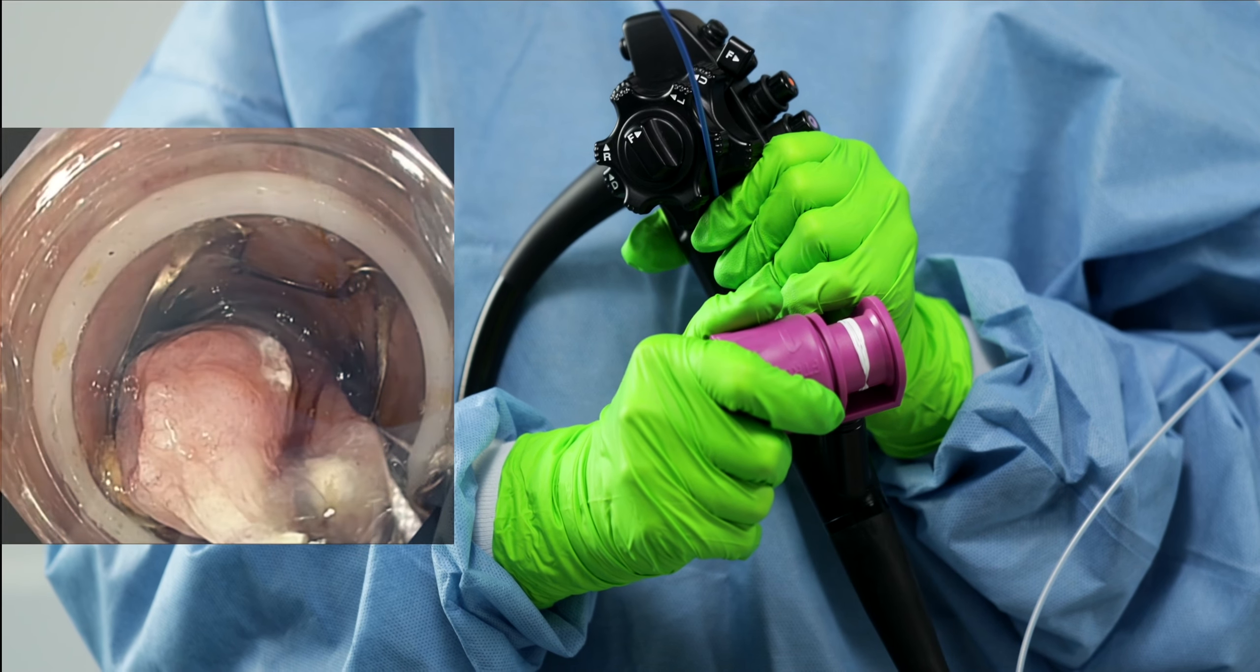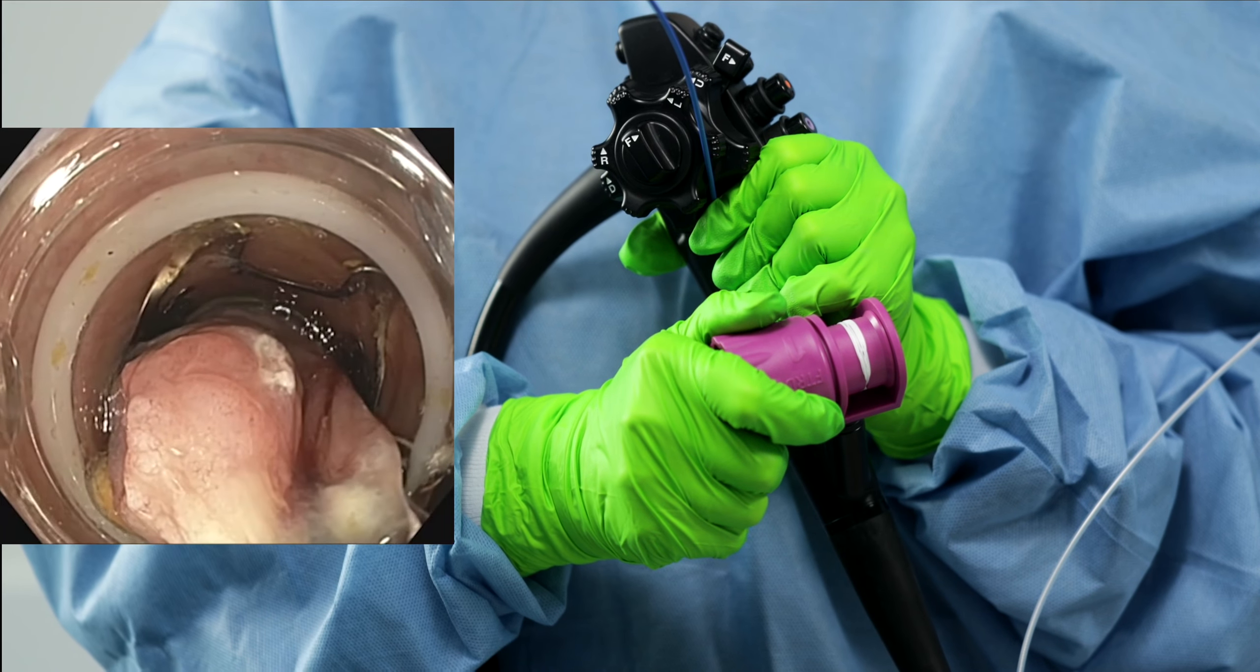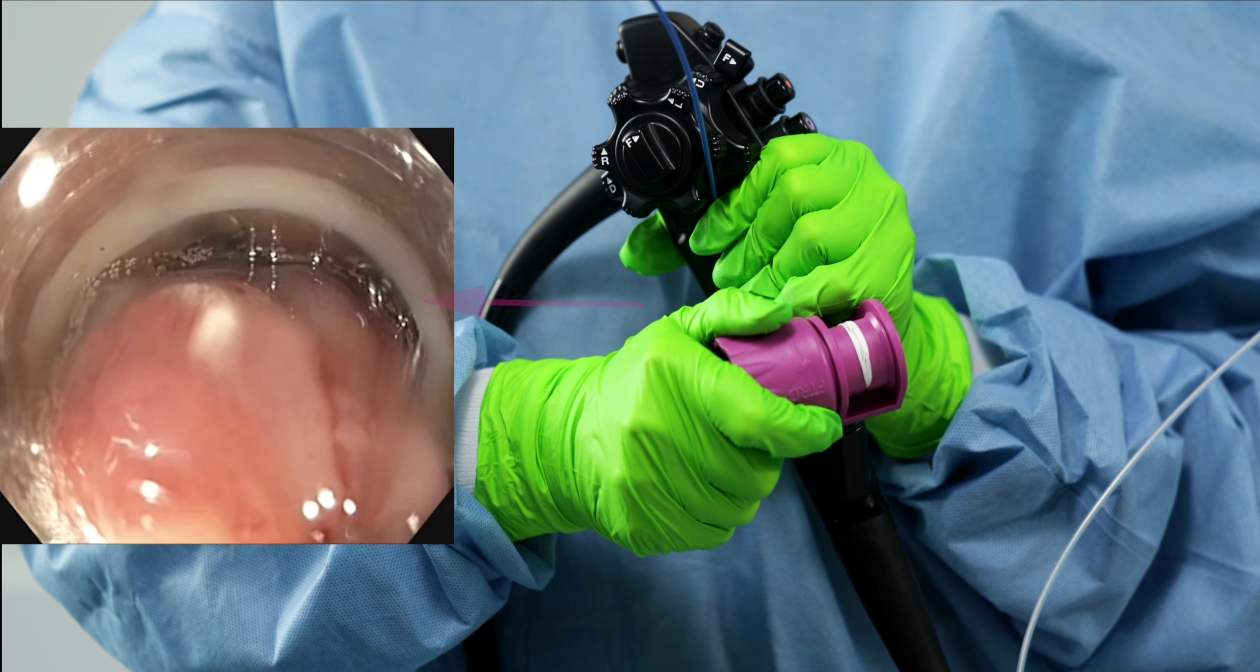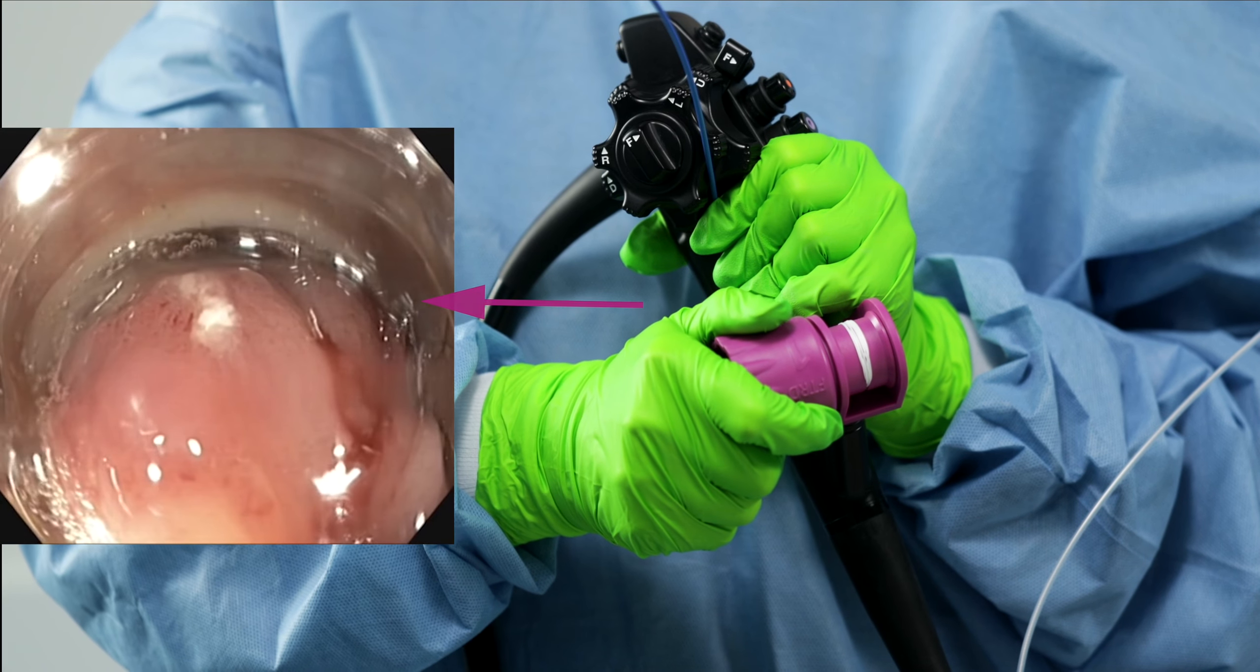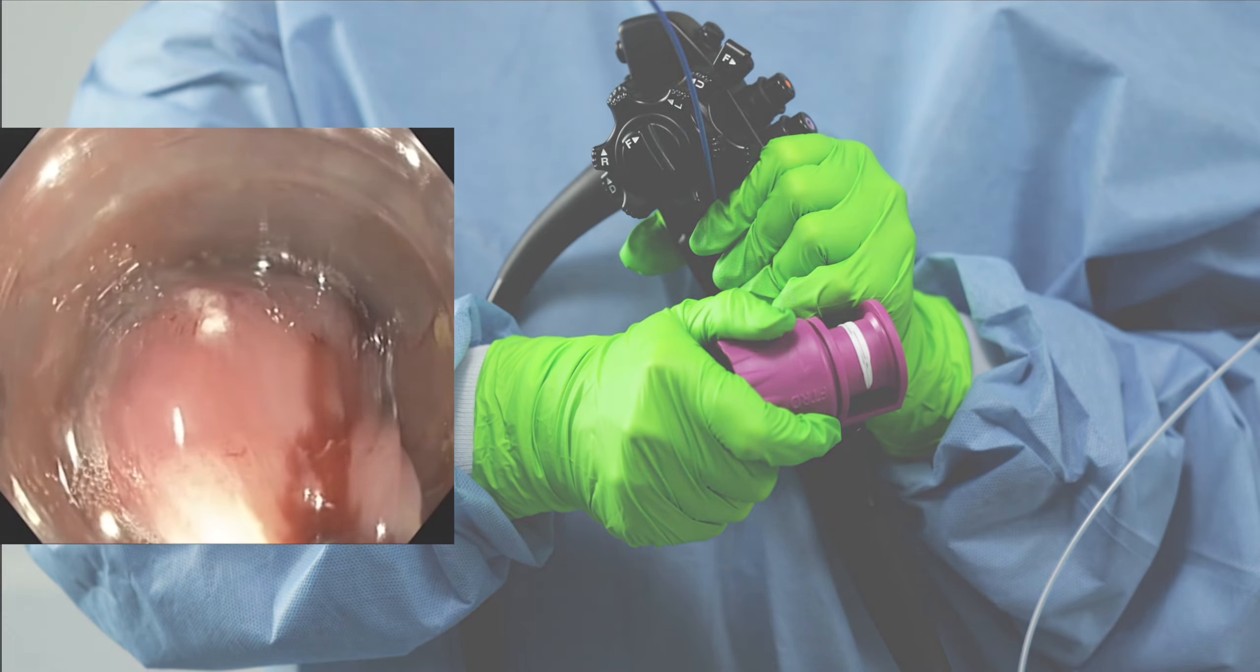Especially when the endoscope is twisted, for example in the colon, the handwheel should be turned as far as possible. It may be necessary to reach back and turn it again, so that the force can be transmitted and the clip applied.